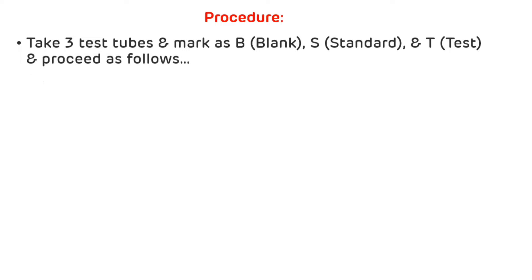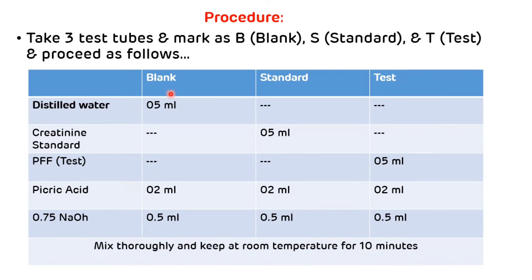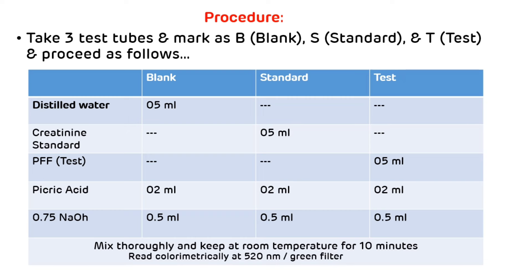Procedure: take 3 test tubes and mark them as blank, standard, and test. In the blank, take 5 ml of distilled water; in the standard, take 5 ml of creatinine standard; and in the test, take 5 ml of protein-free filtrate. In all 3 test tubes, add 2 ml of picric acid, then add 0.5 ml of 0.75 normal NaOH. Mix thoroughly and keep at room temperature for 10 minutes. After that, read colorimetrically at 520 nm wavelength or at green filter.